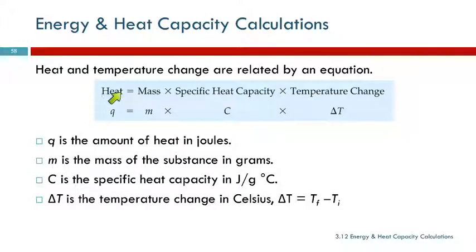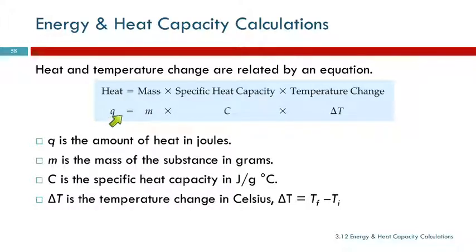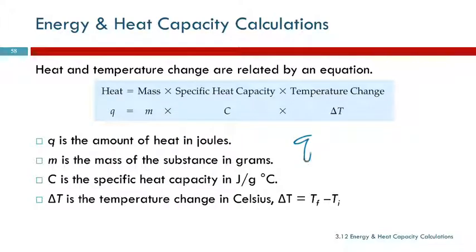The heat is equal to the mass of the object times its specific heat capacity times the temperature change. That's the equation in words. In symbols, Q for heat is equal to mass times C, the specific heat capacity, times the change in temperature. Without all the spaces, Q equals MC delta T.